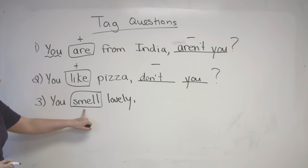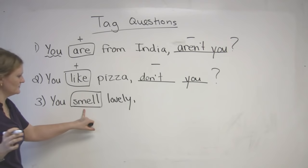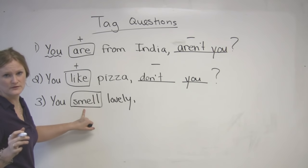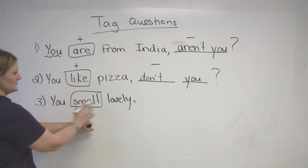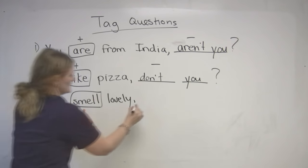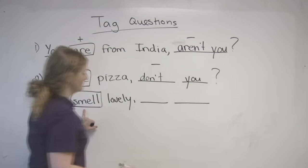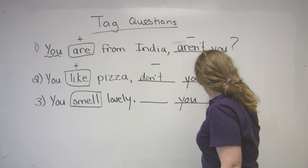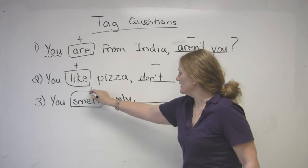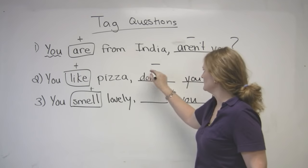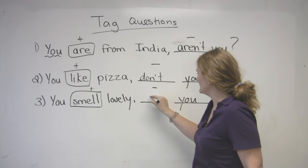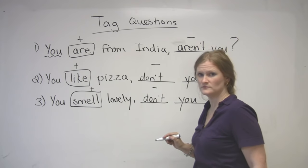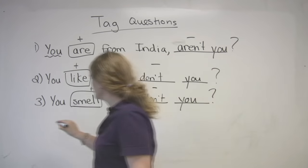This is another one of the verbs where we don't say 'smell not' — we have to use the auxiliary verb 'do'. You smell lovely. We put the subject at the end, and this is positive, so we're going to make it negative: 'don't you?'